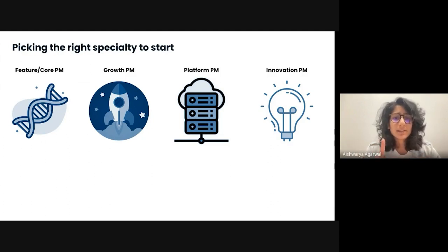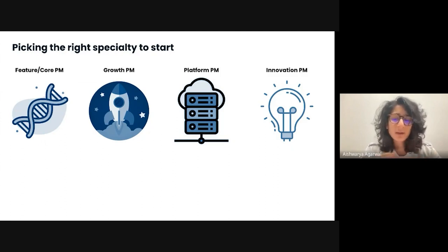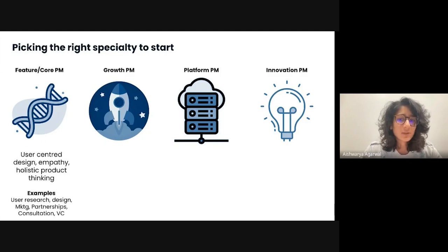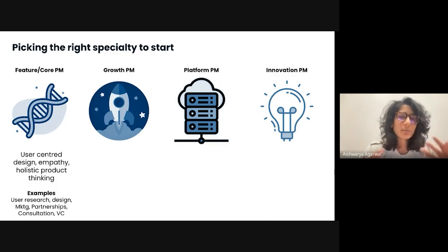Now let's talk about the skills needed and key collaborators. As a feature or core PM, you need to be very user-centered, empathetic, and have some design and creative end of mind. In this role, your key collaborators are designers, UX, engineers, and sometimes marketing and support, depending on how big the feature launch is. You'll be a good fit for this role if you are in user research, design, marketing, partnerships, consultation, or VC, because these roles can be very user-centric.